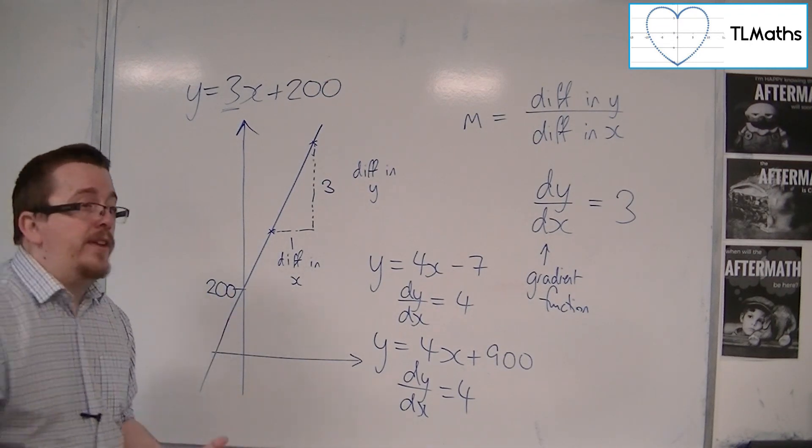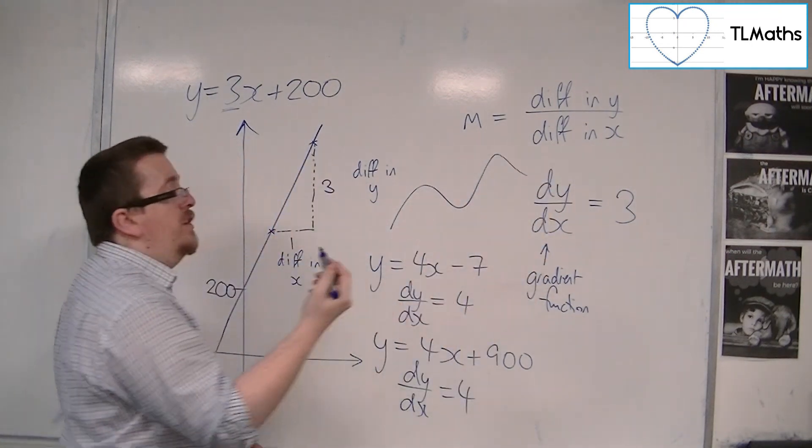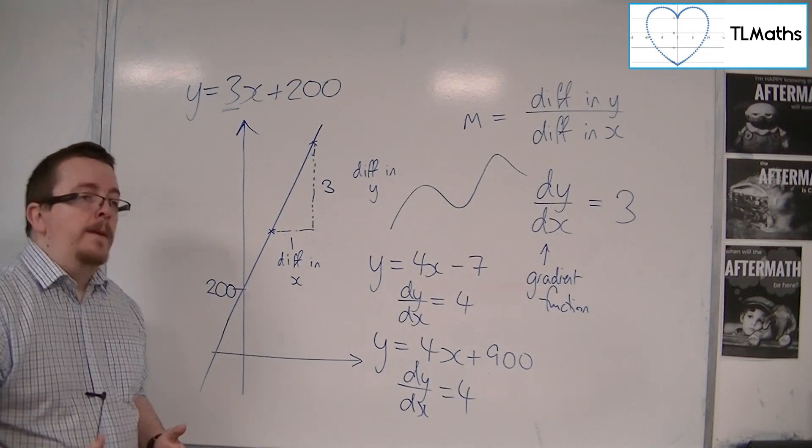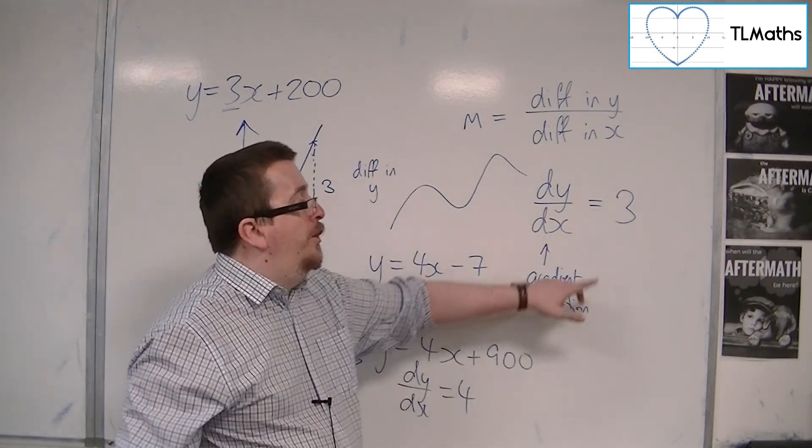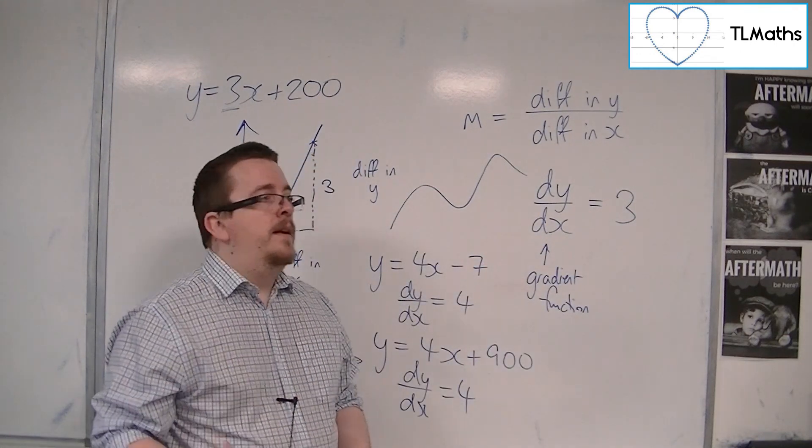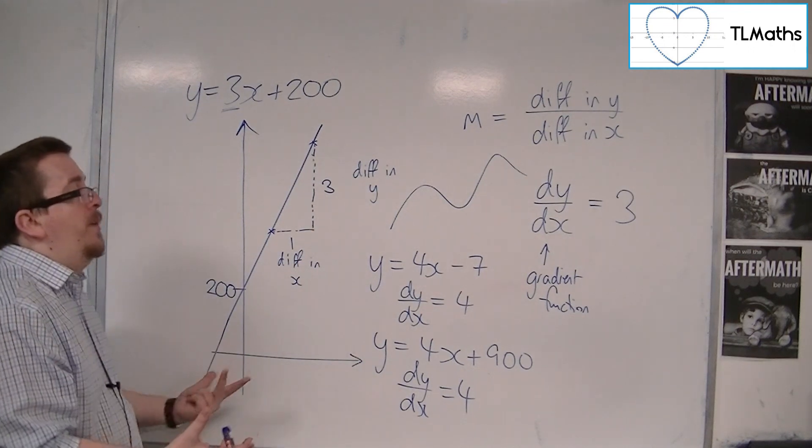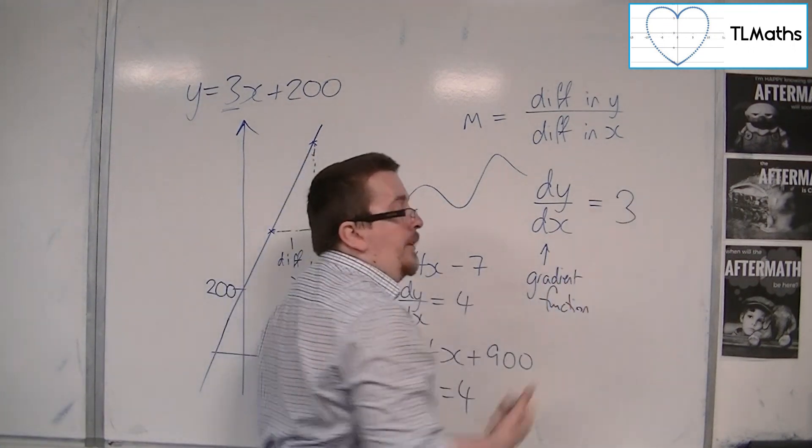Because obviously, the gradient of a curve changes depending on where you are. And so this gradient function that we have will no longer be constant. It will no longer just be a number.